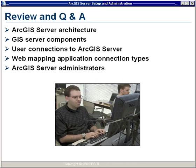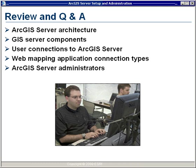In review, we've discussed the three-tier architecture of ArcGIS Server made up of a web server, GIS server, and data server, as well as the internal SOM and SOC components of the GIS server. We reviewed the different ways one can use ArcGIS Server, including the various connection types available for a web mapping application. We also talked briefly about some of the tasks you'll perform as an administrator. Now we'll go to Mike, who will answer some of the questions you've submitted.